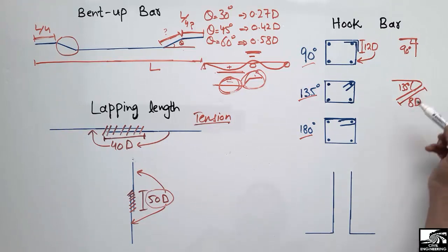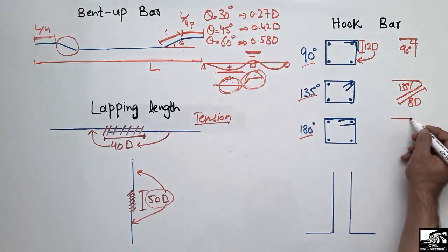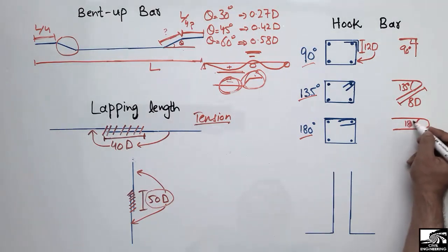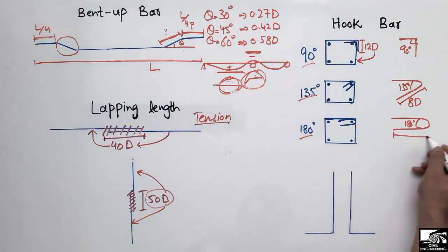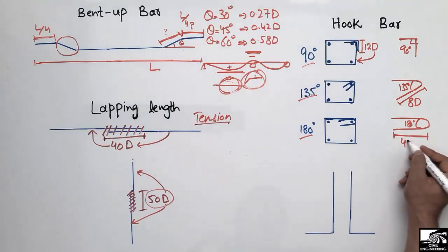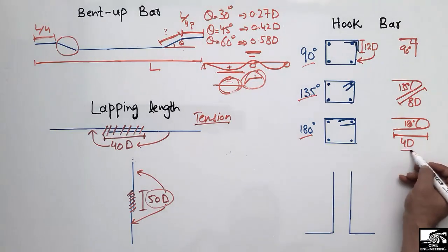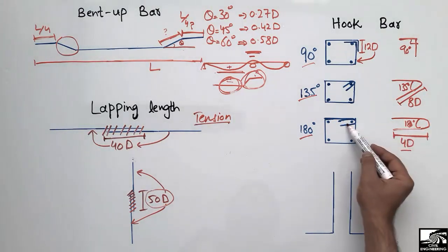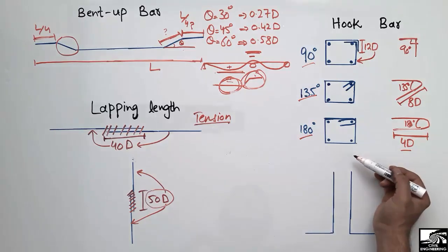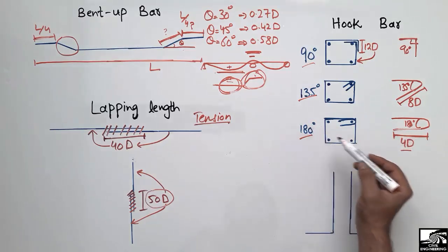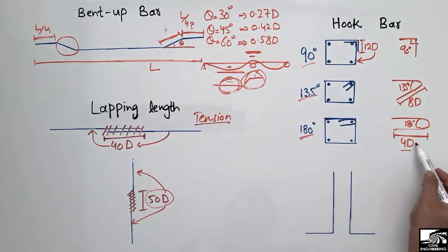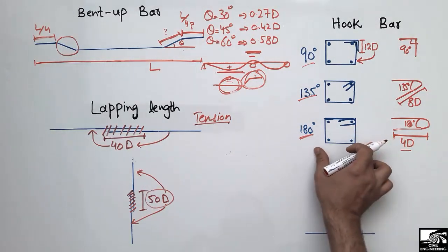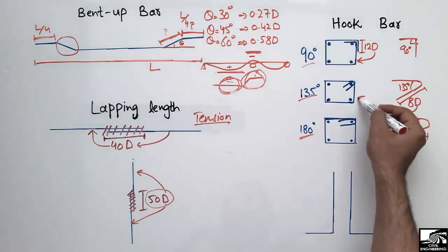For the 180° hook, the hook length is the minimum of the three types — 4 times the diameter of the stirrup (4D). Because the 180° bend provides the greatest anchorage of the stirrup within the concrete, we don't need a large hook length. In summary: 90° → 12D, 135° → 8D, 180° → 4D, where D is the diameter of the stirrups.